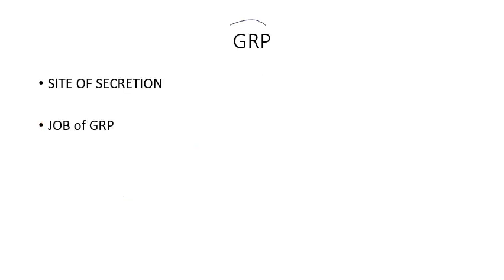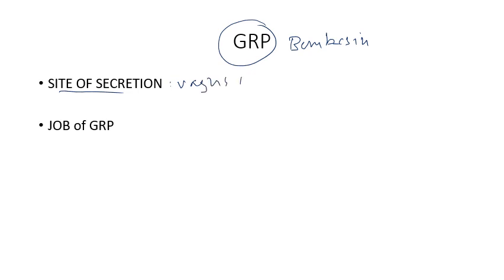Now let's come to GRP — gastrin releasing peptide. Its site of secretion is the vagus nerve that innervates the G cells. As the name indicates, its job is the stimulation of gastrin release from the G cells.